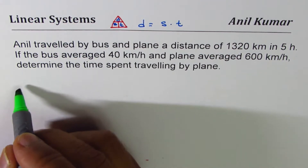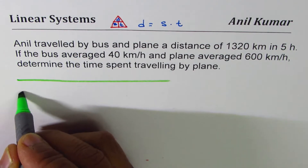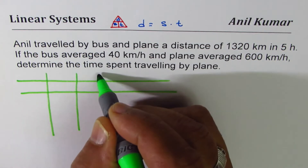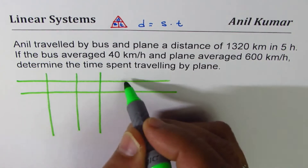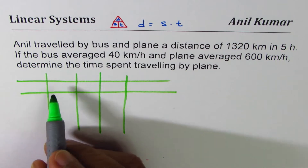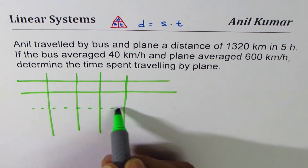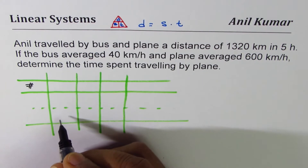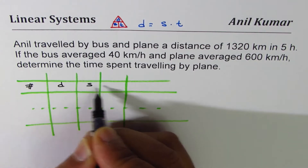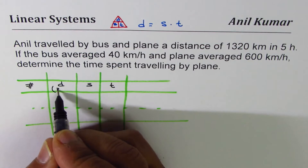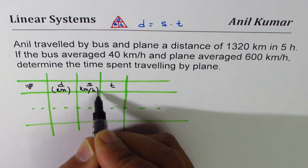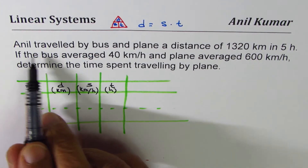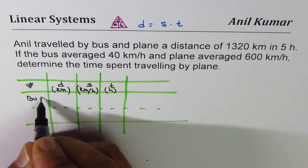We'll make a table with four columns: the first one for the activity, then distance, speed, and time. The number of rows will be the activities, then the total of each activity. Units for distance are kilometers, speed is kilometers per hour, and time is in hours. The activities here are travel by bus and travel by plane.